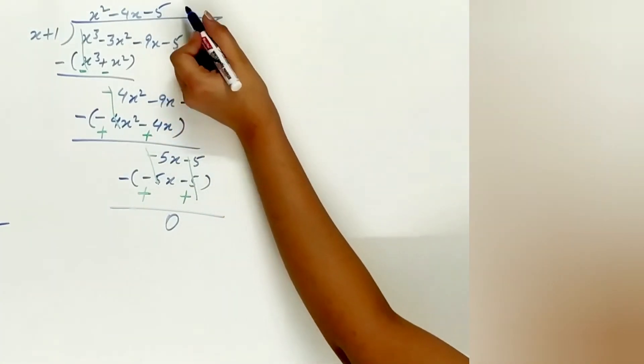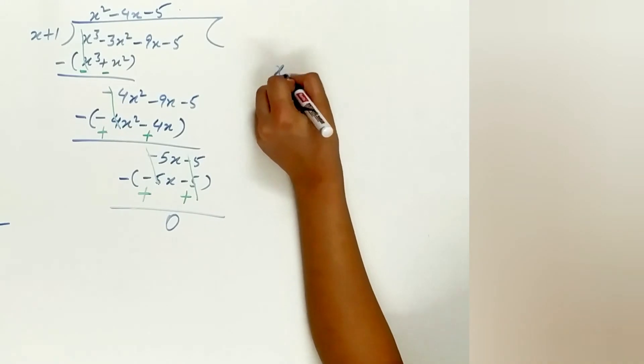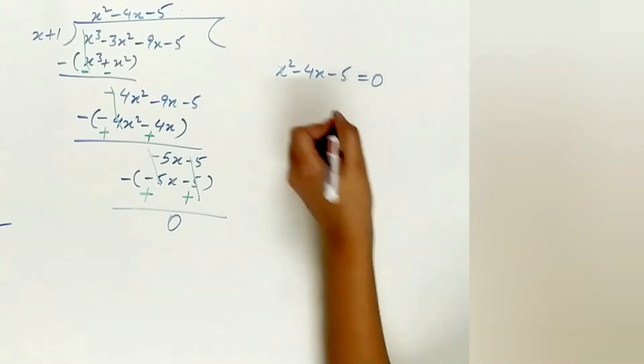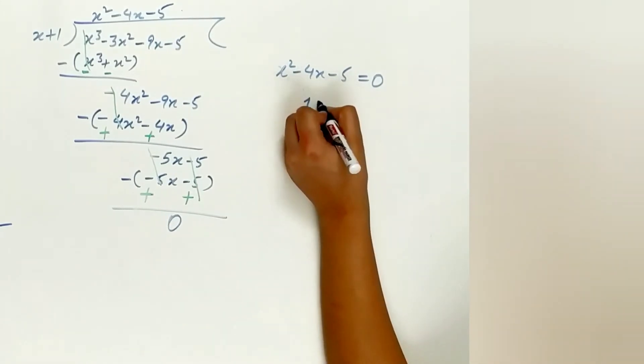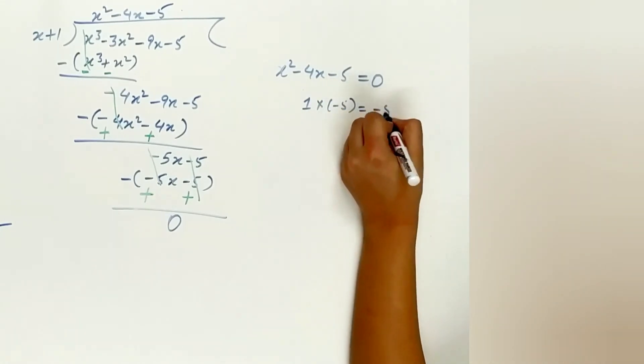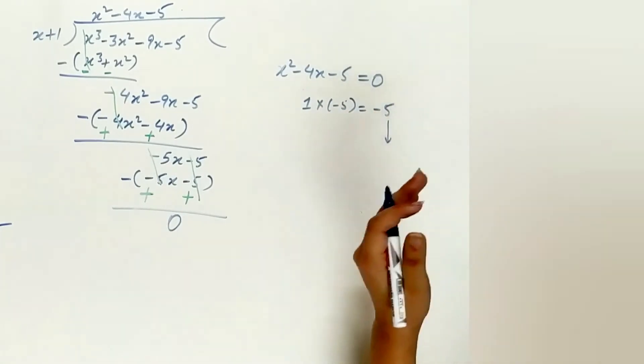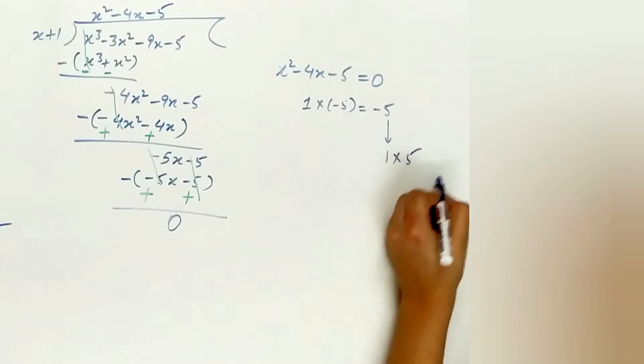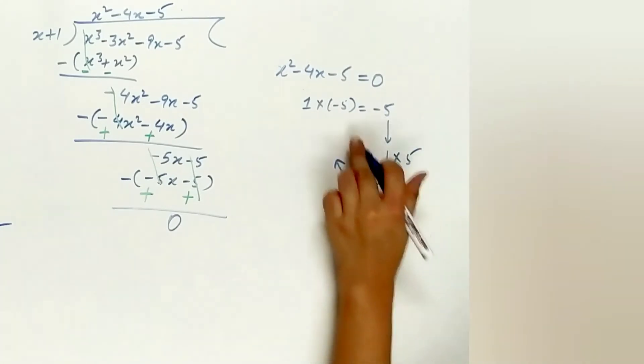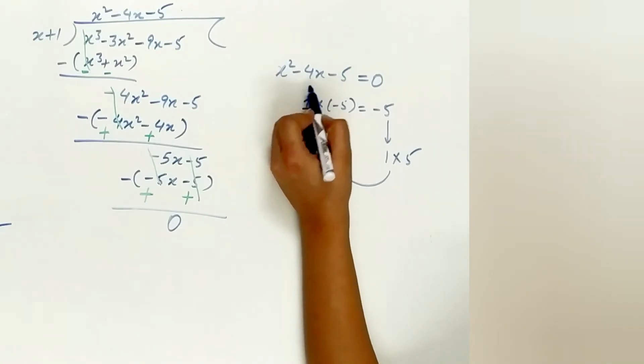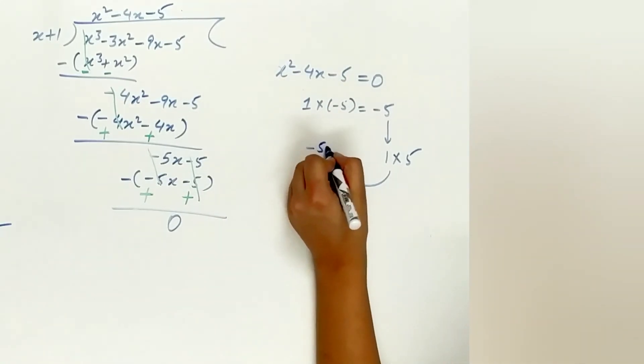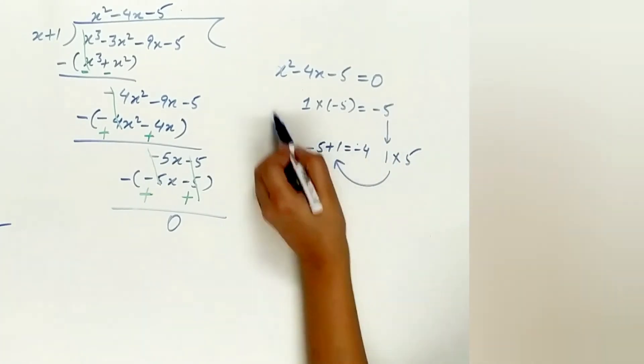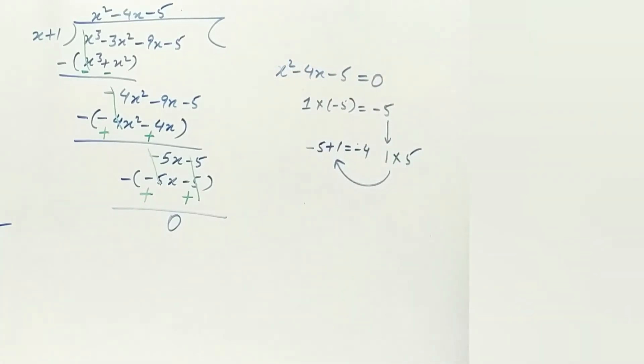So step 4 is to factorize the quotient. Use splitting the middle term method. Multiply coefficient of x square by constant, equal to minus 5. Find the factors of 5. Do not consider negative sign, which are 1 and 5. Arrange them in such a manner to get coefficient of x, or minus 4.